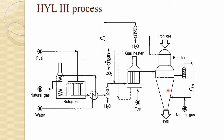These are the essential operations not just of the HYL-3 process but of many fluidized bed processes. If the product is hot, a briquetting machine is used to convert the hot directly reduced iron into briquette form.